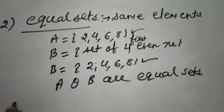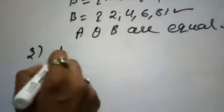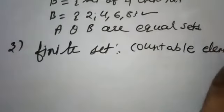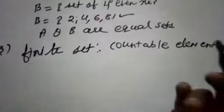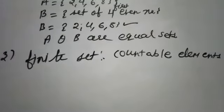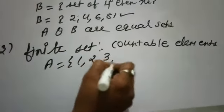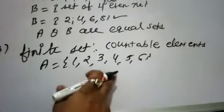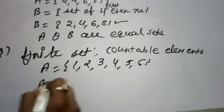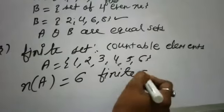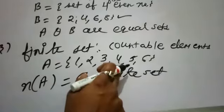Now our third point is finite set. Finite set means a set which has countable elements. Countable elements means we can easily count the number of elements in any set — that time, that set is known as a finite set. Here, the set {1, 2, 3, 4, 5, 6} is the set of six natural numbers. So set A is a finite set. Why? Because we can easily count the number of elements in set A.